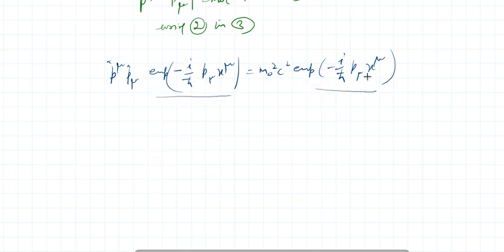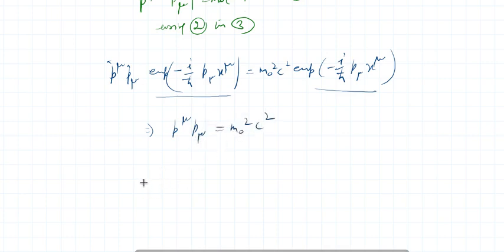Both exponential terms look identical and cancel out, which means we can write that p_μ p^μ equals m₀² c². Expanding this, it can be written as E squared over c squared minus p·p equals m₀² c².